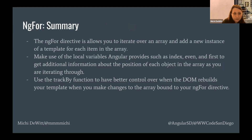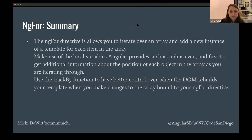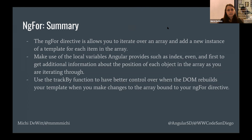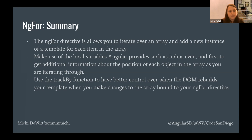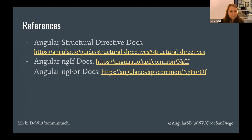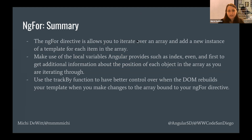To summarize ngFor: it's a directive that allows you to iterate over an array of items and add a new instance of your template for each item in that array. You can make use of local variables that Angular provides — like index, first, last, even, odd — to get additional information about where your object is in the array. And you can use the trackBy function to get better control over how your DOM rebuilds when there are changes to your array. Another common structural directive I'm not covering tonight is ngSwitch, which works just like a switch statement in JavaScript — you have ngSwitch with an expression, ngSwitchCase for matches, and ngSwitchDefault as the fallthrough.